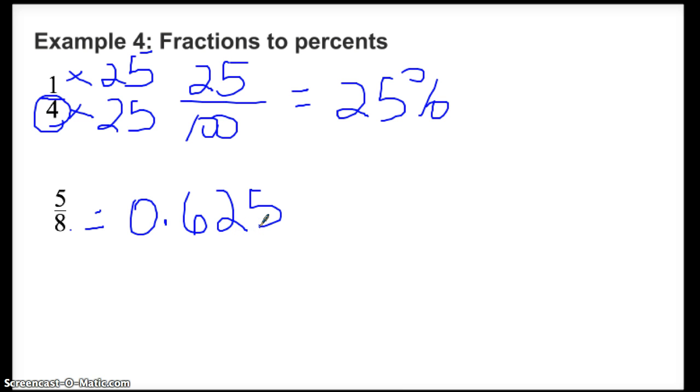Now to turn that into a fraction, we just take these numbers, 625. And I try to figure out what place value that 5 holds, and it holds the thousands place. So that means it goes over 1,000. That's as simple as it can be to turn a decimal into a fraction.